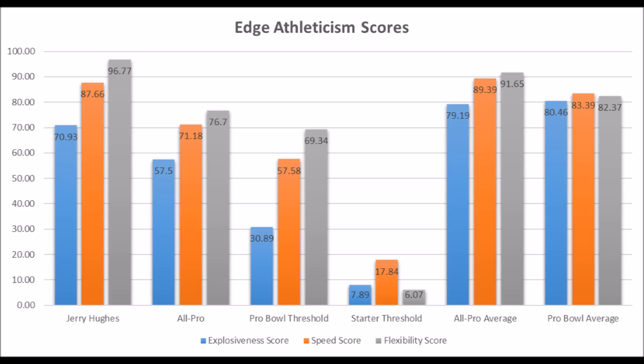If you're a real believer in data and analytics, Landry is your guy in this draft class — by far the best edge rusher based on data alone. That doesn't mean you should leave film out of it, but that's what the data says. If your team drafts Harold Landry, there's a very good shot he becomes a successful player.